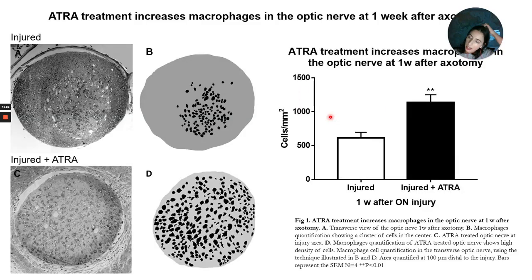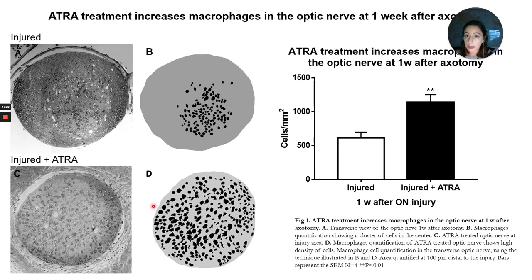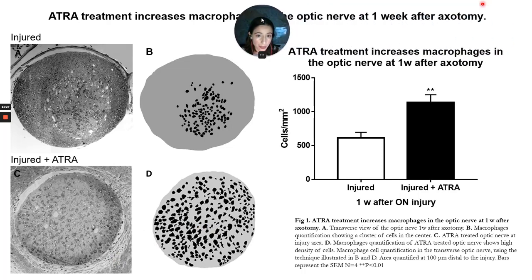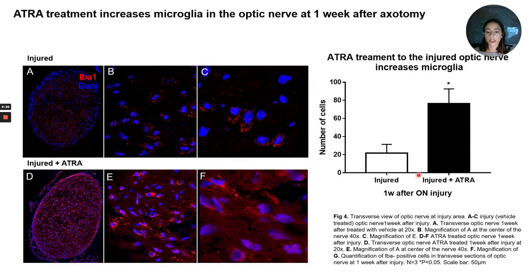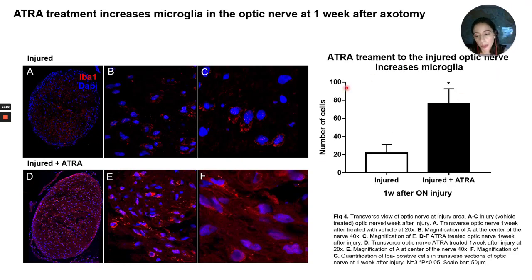These are light microscopy images showing a transverse view of the optic nerve. In the upper panel we have the control or injury-only condition, and in the lower panel the injury with retinoic acid application. We found that retinoic acid treatment increases macrophages in the optic nerve after axotomy — it appears to roughly double the amount of macrophages in these nerves. We also found that microglia increased and appeared in greater numbers in the nerves where retinoic acid was applied.